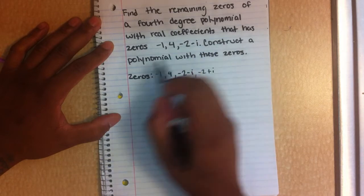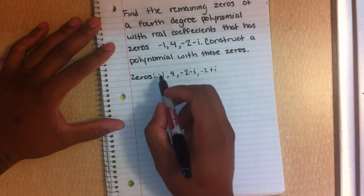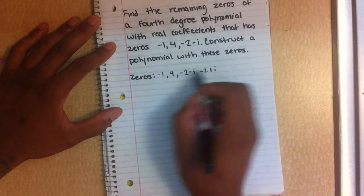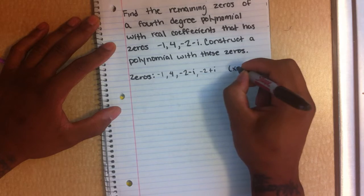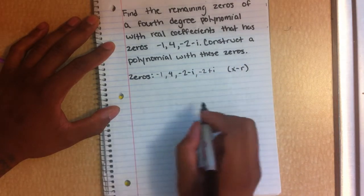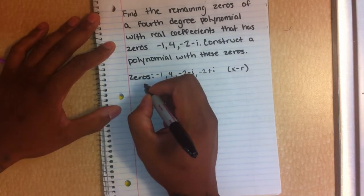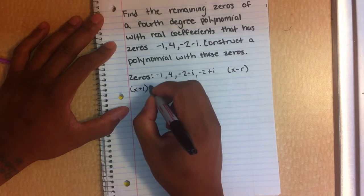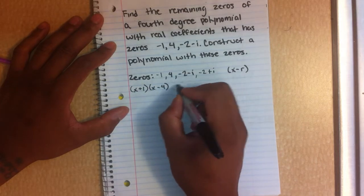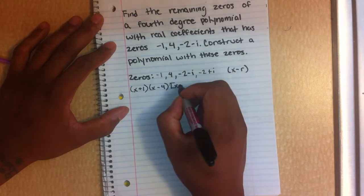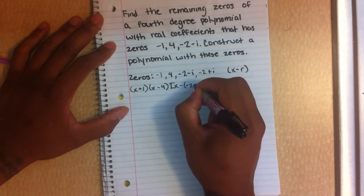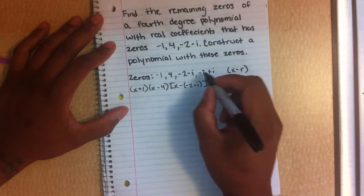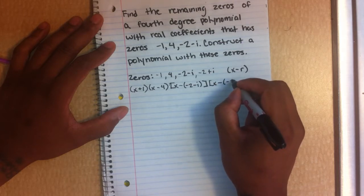The next step is to construct a polynomial with these zeros. We will want to turn these zeros into factors of the function. To turn these zeros into factors, we use the formula x minus r, with r being each one of the zeros. So the first factor is x minus negative 1, which is x plus 1. The second is x minus 4. The third is x minus negative 2 minus i, and the fourth is x minus negative 2 plus i.